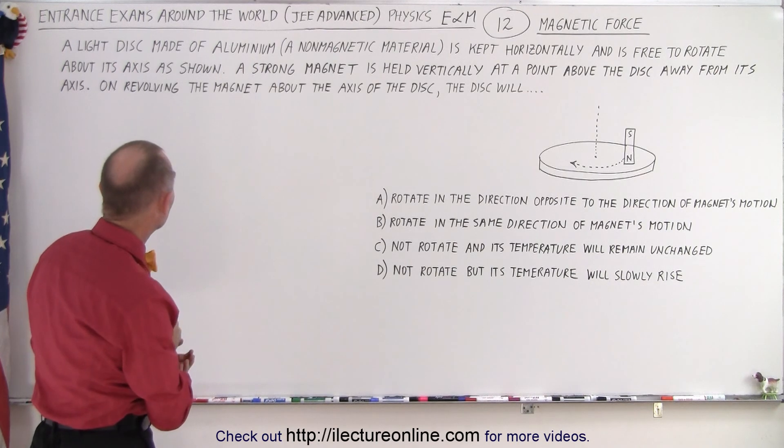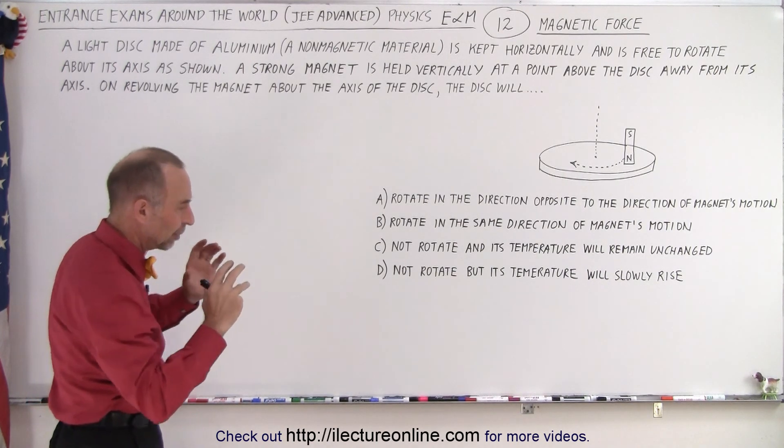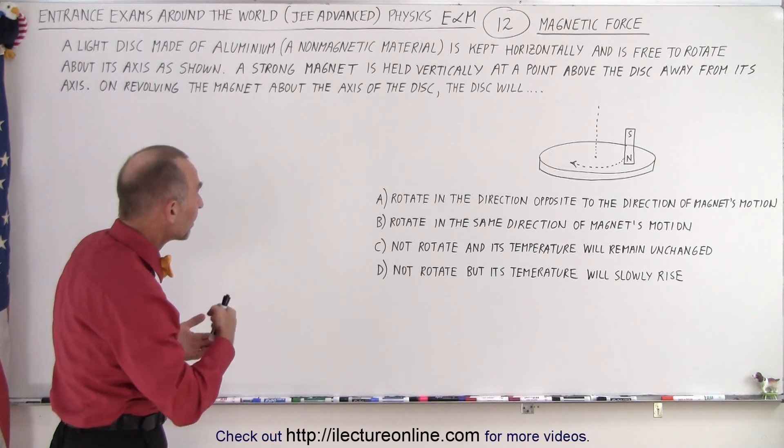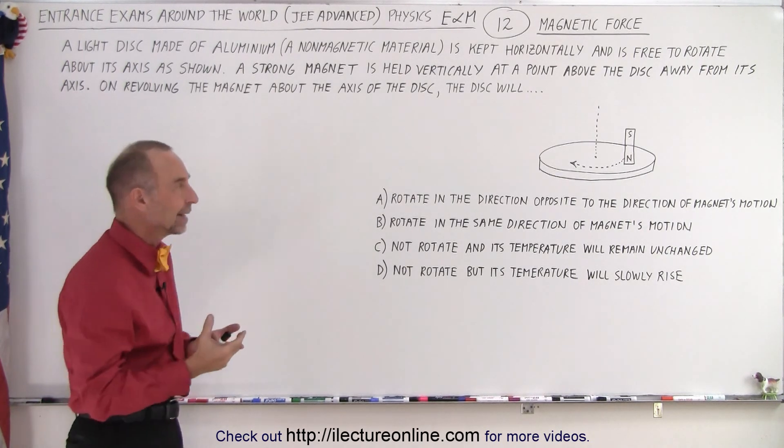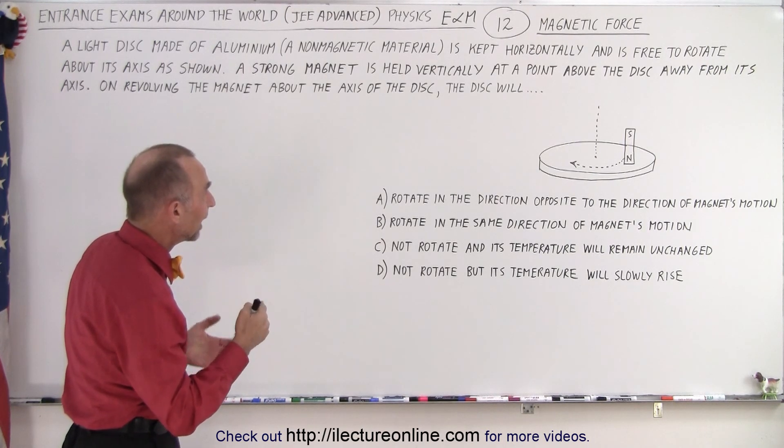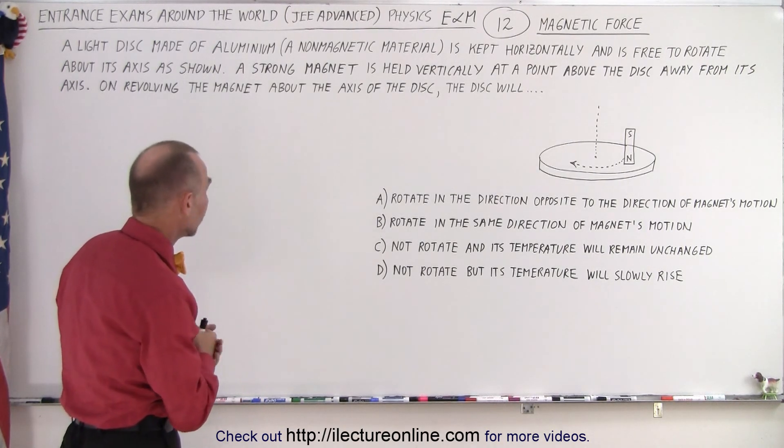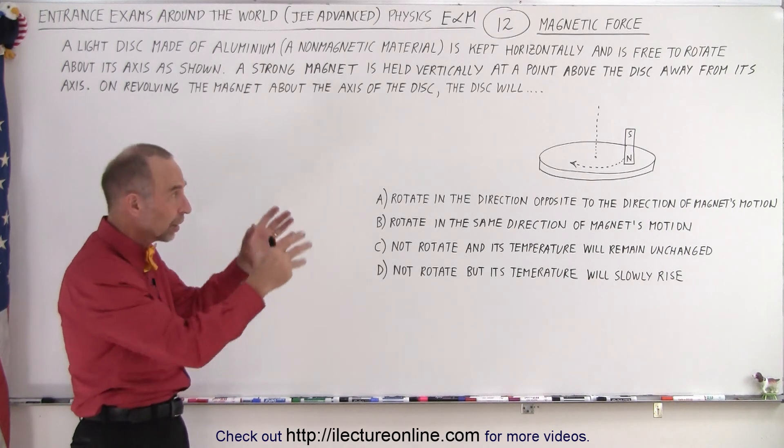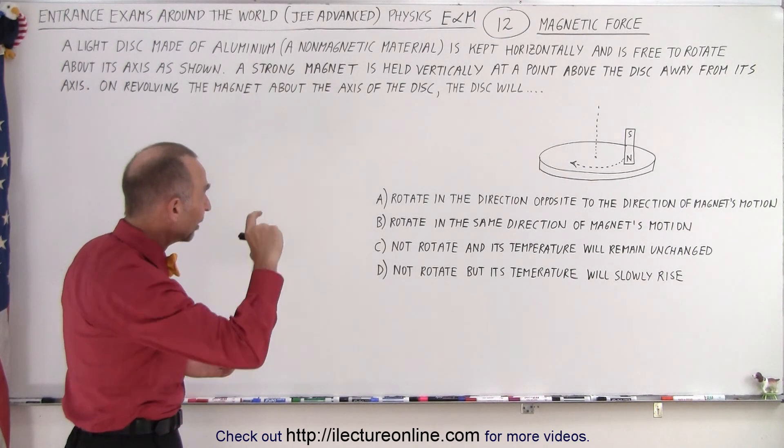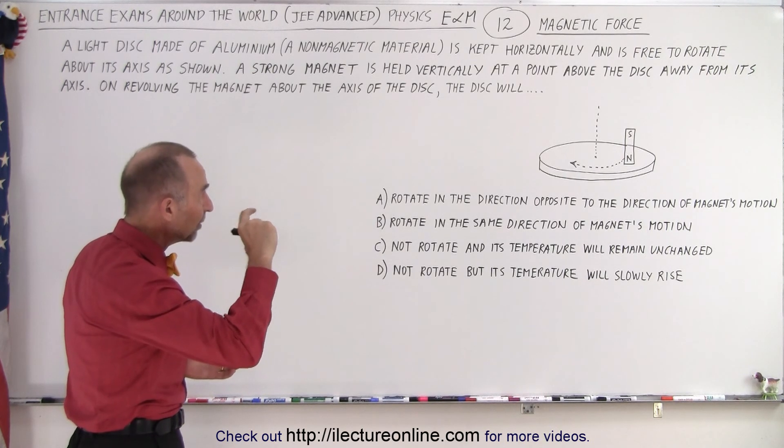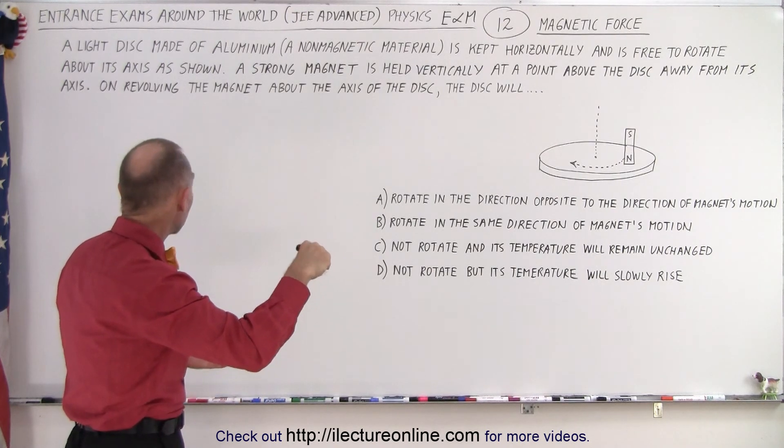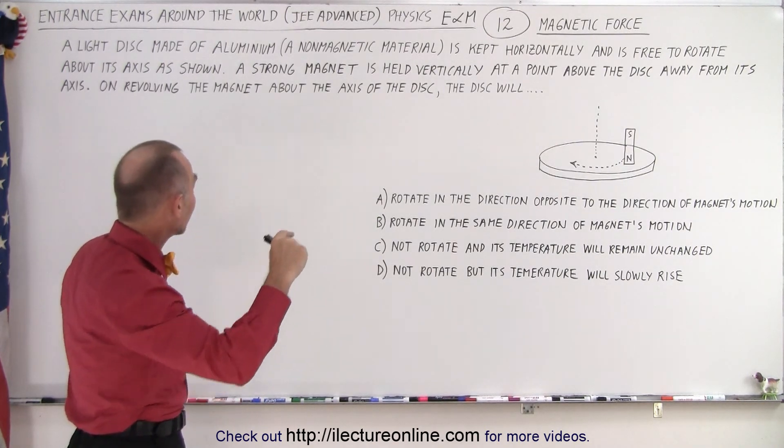A light disc made of aluminum, a non-magnetic material that cannot be magnetized such as iron can, is kept horizontally and is free to rotate about its axis as shown. They give you a little diagram that looks like that. A strong magnet is held vertically at a point above the disc, with the north down and the south up, away from the axis.